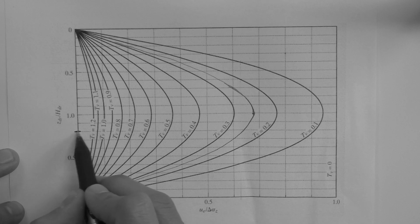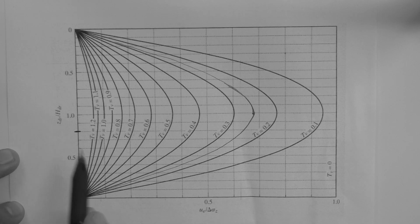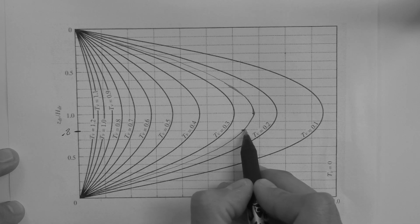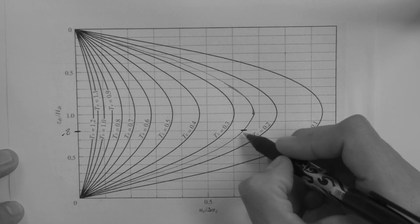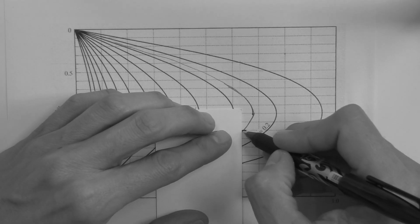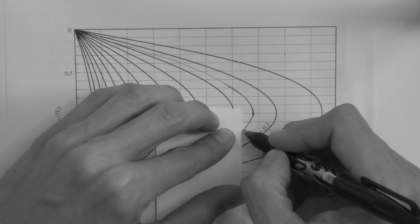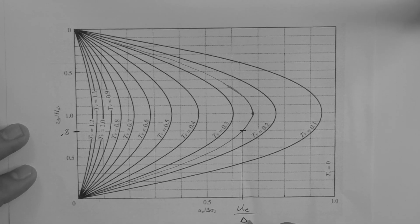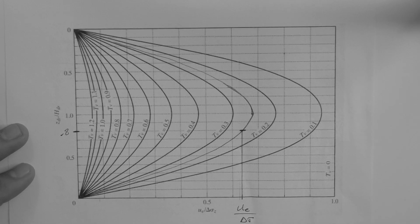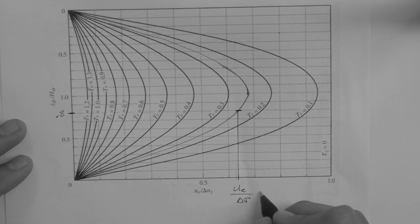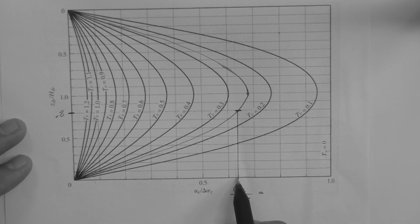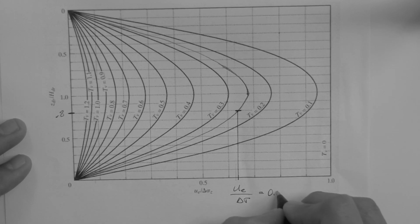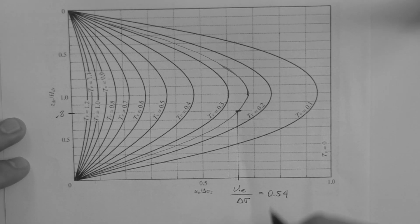So, if we extend this y-axis mark for 0.8 down the line up to here, we hit the isochrone, and now we can capture our value of UE over delta sigma. Which is, 0.5, 0.6, 0.7. This is about 0.64.